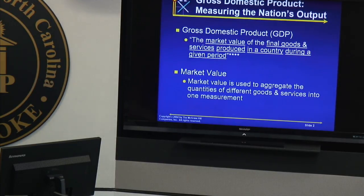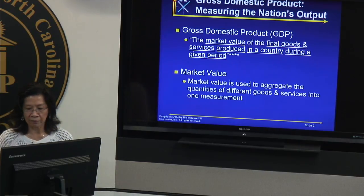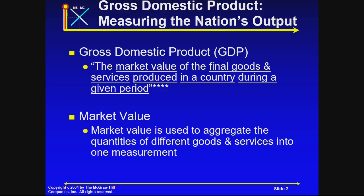In chapter four we're dealing with Gross Domestic Product. This is the definition: it's the market value of the final goods and services produced in a country during a given period. Everything that I underline there is extremely important, because we would unpack that definition for everything underlined when you define Gross Domestic Product.